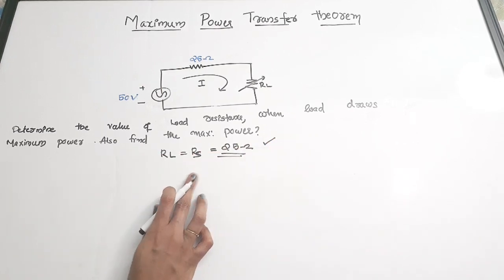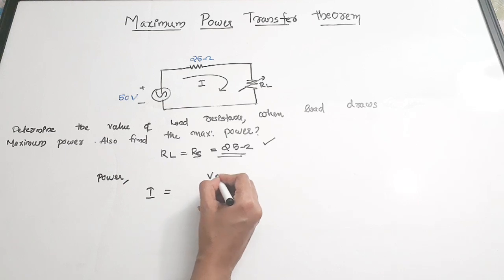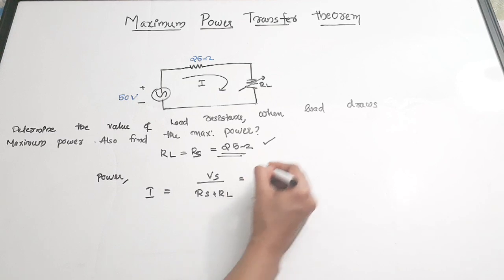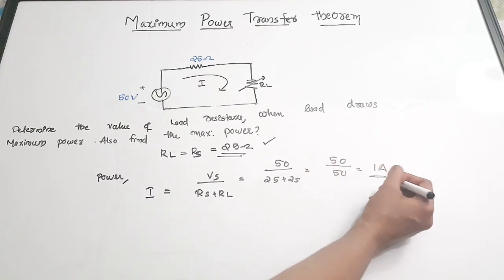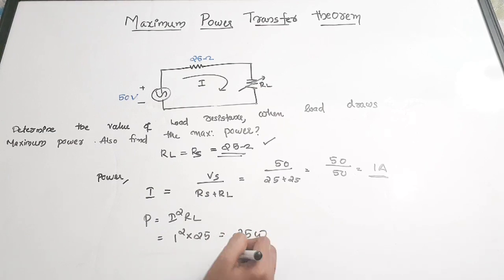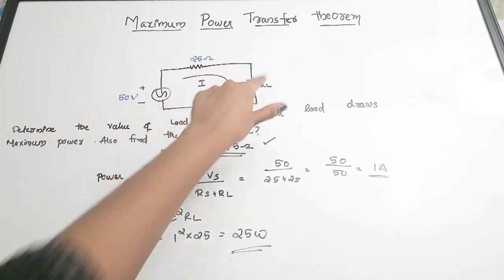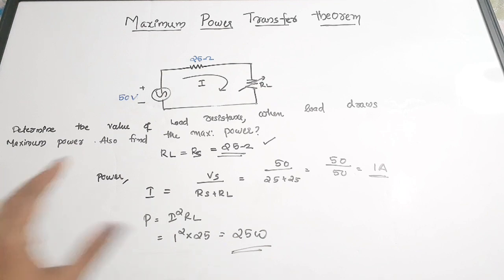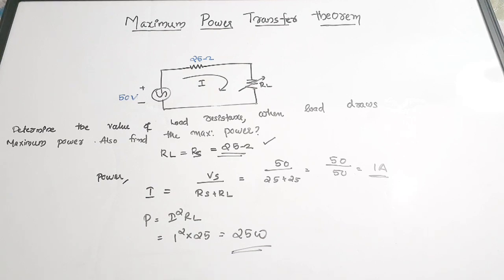Next, we find the power. Current I = Vs / (Rs + RL) = 50 / (25 + 25) = 50 / 50 = 1 ampere. Power P = I²·RL = 1² × 25 = 25 watts. This question is simple because there are no other elements like inductance or capacitance connected with Rs or RL. The answer is RL = 25 Ω and maximum power = 25 watts.